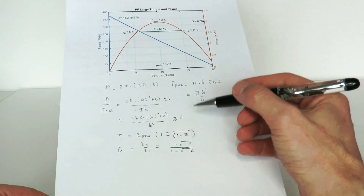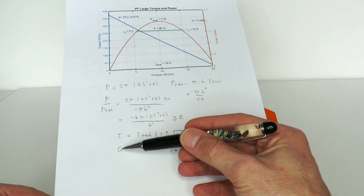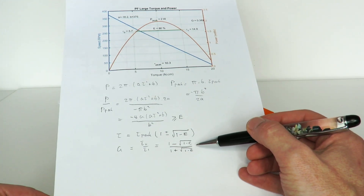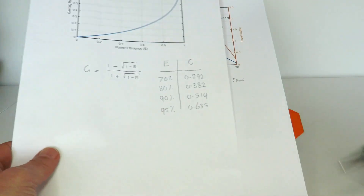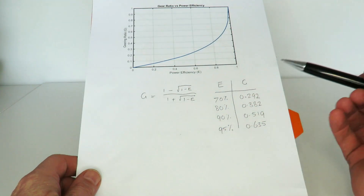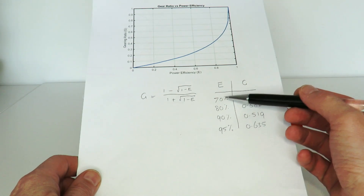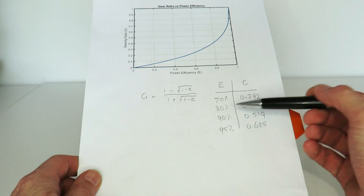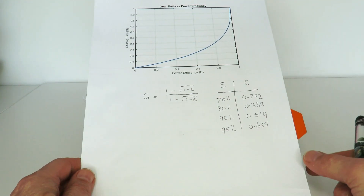What's interesting about this equation is that it's independent of the motor parameters a and b. This means that in order to keep within an operating efficiency of e, the gear switching ratio is simply a function of e alone — it doesn't depend on the motor type or characteristics, provided the torque-speed curve is linear. I thought this was a very interesting result. Plotting efficiency e versus gearing ratio g, for e = 70% we need a ratio of 0.292, for 80% it's about 0.38, and for 90% it's about 0.519.